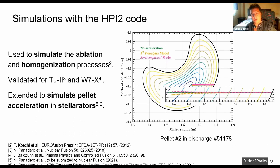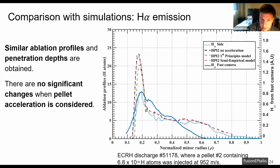First, I will compare the prediction of the ablation rate from the code with the H-alpha emission profiles captured by the photodiode system and the fast camera system. We can conclude here that very similar ablation profiles are found and also penetration depths. And also, it can be concluded that there were no significant changes in the predicted ablation rate when the acceleration is considered.